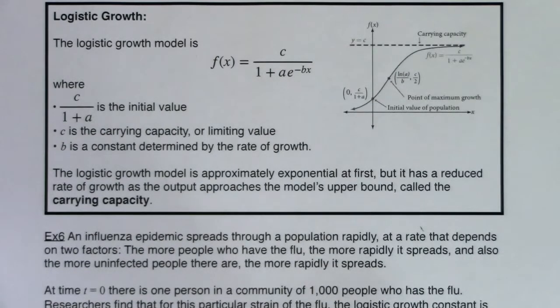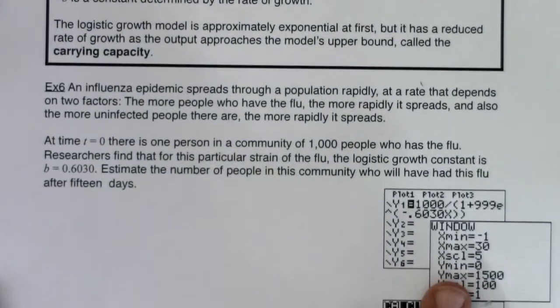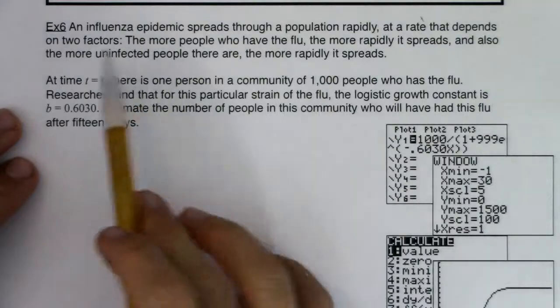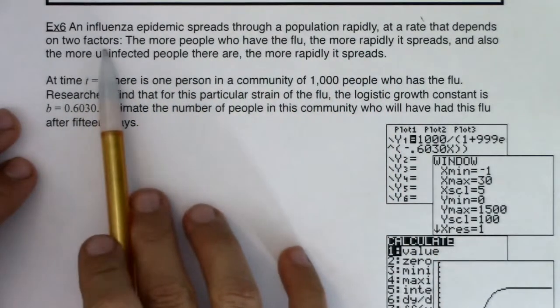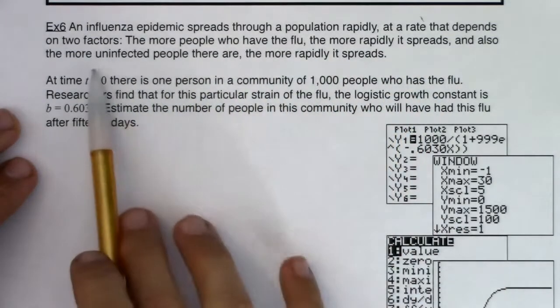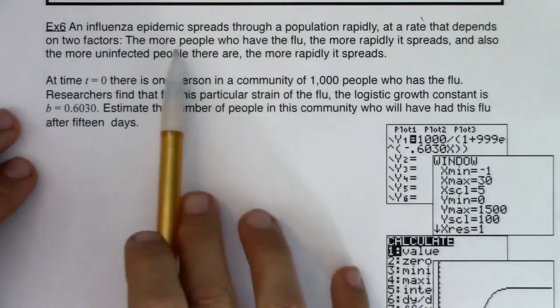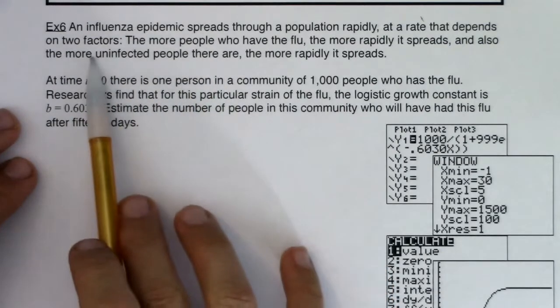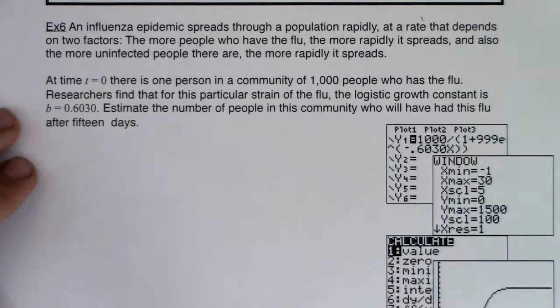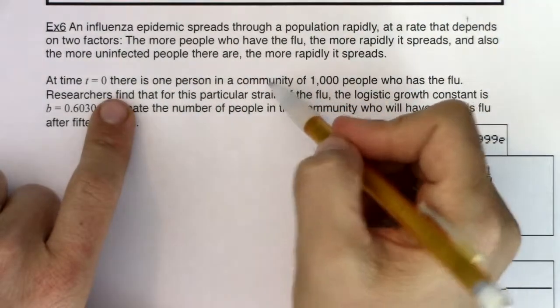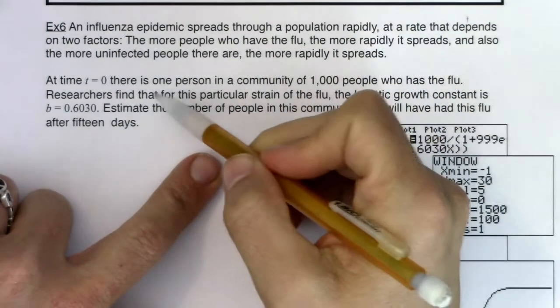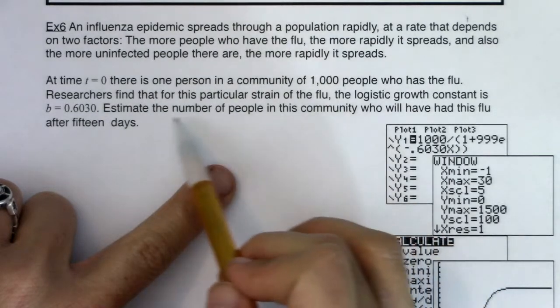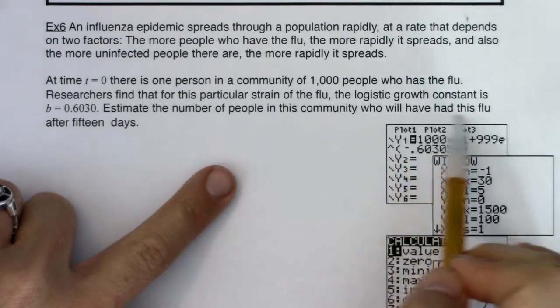We're going to do a version of this problem where we're taking a look at the flu spreading. So let's scooch this up and we'll remember that equation, I'll rewrite it once I get the problem in view. So let's see what we can pick apart here. It says an influenza epidemic spreads through a population rapidly at a rate that depends on two factors. The more people who have the flu, the more rapidly it spreads. And also the more uninfected people there are, the more rapidly it spreads. So if more people have the flu, more people are going to get the flu. But if you have a lot of uninfected people, then they're also going to get the flu pretty fast. But the smaller this number gets, like when uninfected go down, then that virus is going to stop spreading. So it says at time t equaling zero, there is one person in a community of a thousand people who has the flu. Researchers find that for this particular strain of the flu, the logistic growth constant is b equaling 0.6030. Estimate the number of people in this community who will have had this flu after 15 days.